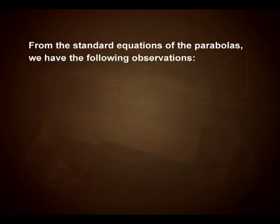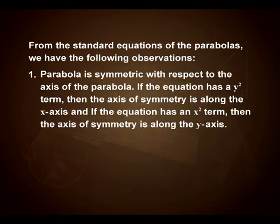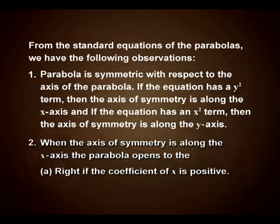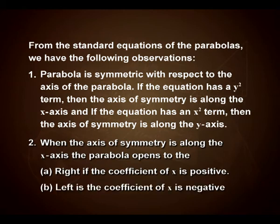From the standard forms of a parabola, we have some important observations. A parabola is symmetric with respect to its axis. If the equation has a y² term, then the axis of symmetry is along the x-axis. If the equation has an x² term, then the axis of symmetry is along the y-axis. When the axis of symmetry is along the x-axis, the parabola opens to the right if the coefficient of x is positive, and opens to the left if the coefficient of x is negative.